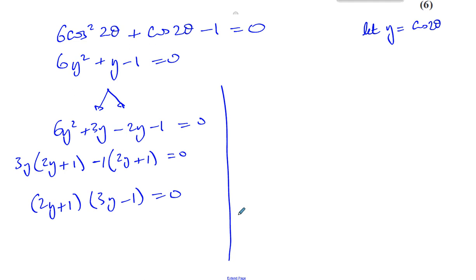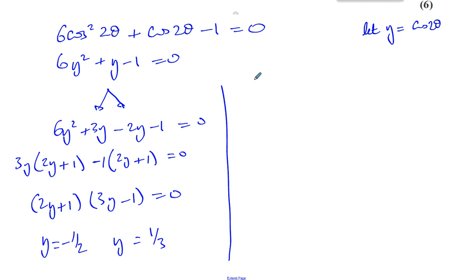Now we have two solutions. Either y = -1/2, or y = 1/3. From 2y + 1 = 0, y must be -1/2, and from 3y - 1 = 0, y must be 1/3. So we can say that cos(2θ) = -1/2, giving one set of solutions, and cos(2θ) = 1/3, giving another set.